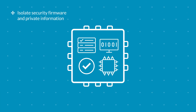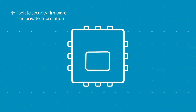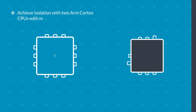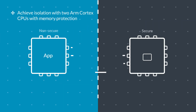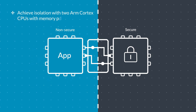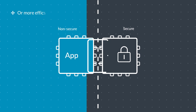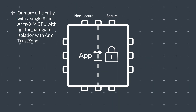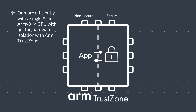PSA specifies isolation of the security firmware and private information from the rest of the application software. You can do so with two ARM Cortex-M CPUs with memory protection, or more efficiently with a single ARM V8-M CPU that has built-in hardware isolation with ARM TrustZone.